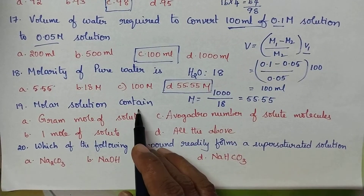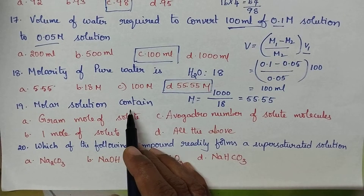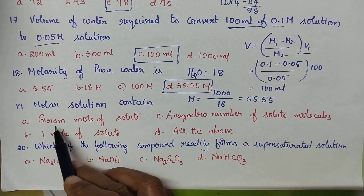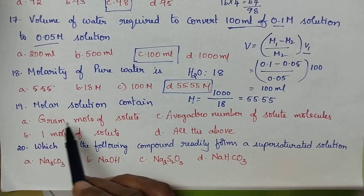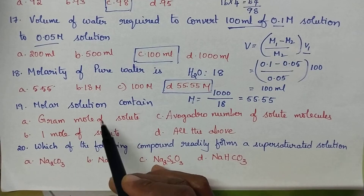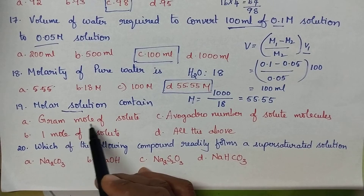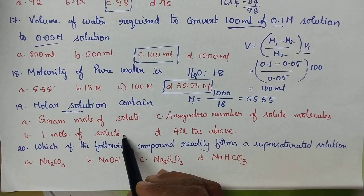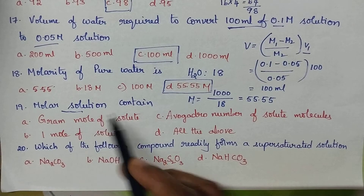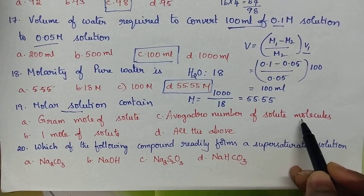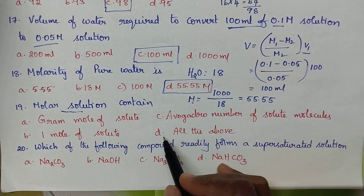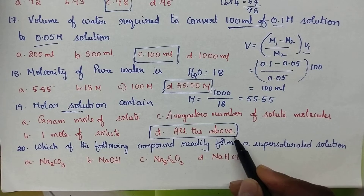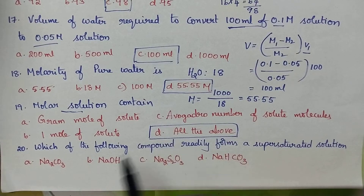A molar solution contains: option A is gram mole of solute — a molar solution contains a gram mole of solute. Option B is 1 mole of solute — also correct. A 1 molar solution also contains Avogadro's number of solute particles (option C). So A, B, and C are all correct, making option D — all of the above — the right answer.